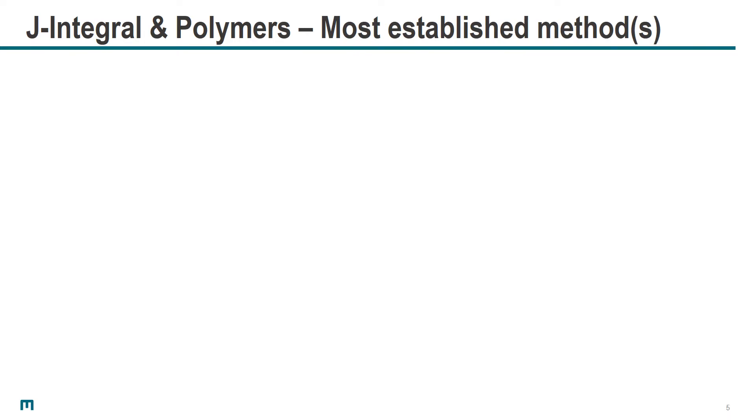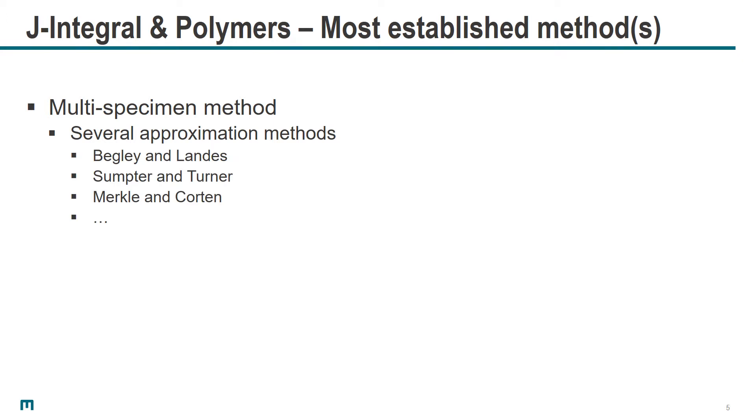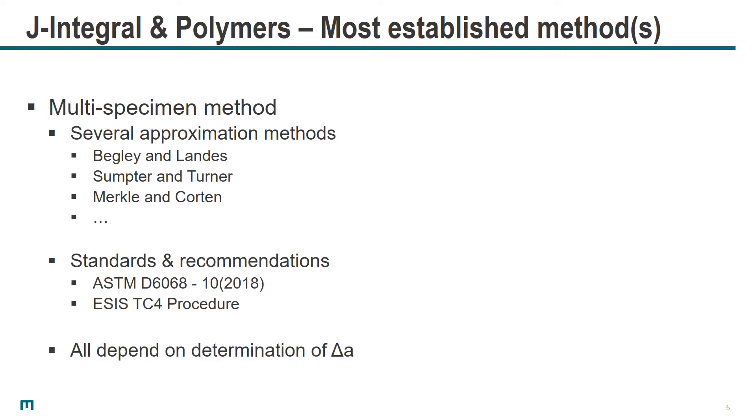Therefore, the most established method for J-integral testing of polymers is the multi-specimen method. There are several approximation methods such as Begley and Landes, Sumpter and Turner, or Merkle and Corten, and there are standards and recommendations such as ASTM D6068 or the ESIS TC4 procedure. However, all of these methods depend on the determination of the correct value of crack advancement, delta A, on the fracture surface post-mortem after testing.